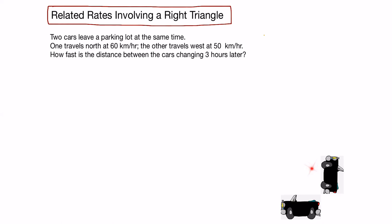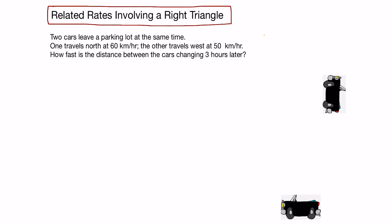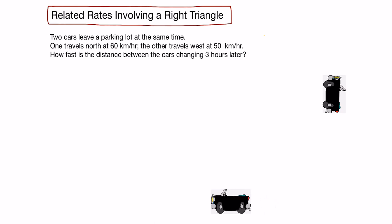In this related rates problem, we have two cars. One will travel north at 60 kilometers per hour and the other will travel west at 50 kilometers per hour. We need to determine how fast the distance between them is changing three hours later. Let's start with a visual: after three hours, we can draw a diagram showing the north car's distance, the west car's distance, and the distance between them. Because the cars travel north and west, there is a right angle at the starting point.